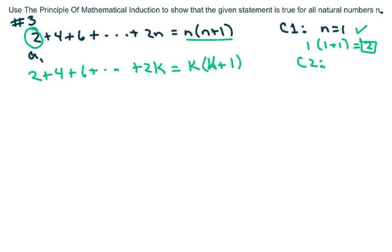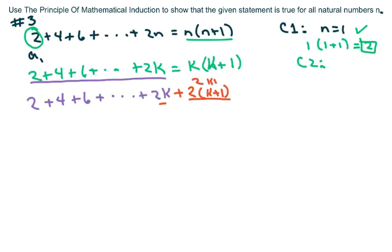So what I'm going to do is copy this down again. It's going to be 2 plus 4 plus 6 plus dot dot dot plus 2k, and then we're going to write the next term. And the next term is we're going to write this term and substitute k plus 1, which gives you 2k plus 2.